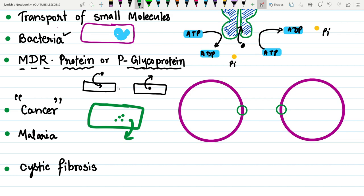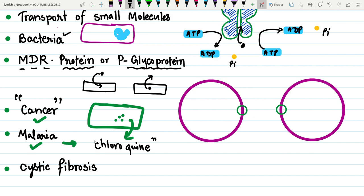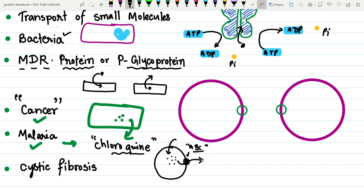This presents a huge hurdle in the battle against cancer. A similar phenomenon occurs in malaria, where the famous anti-malarial drug chloroquine is transported back out of the cell by ABC transporters. This makes it challenging to treat malaria, particularly with virulent species of Plasmodium falciparum, which kills around 200 million people worldwide.